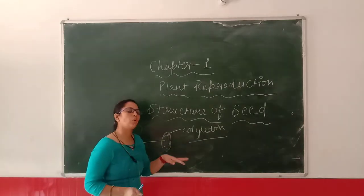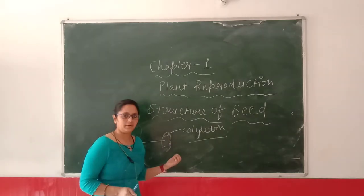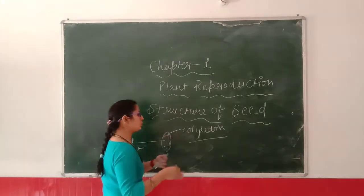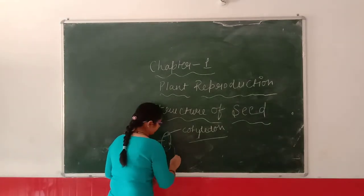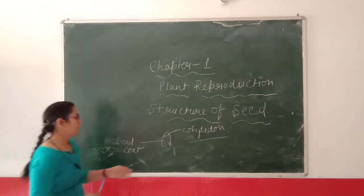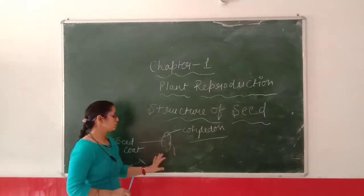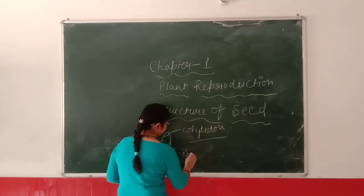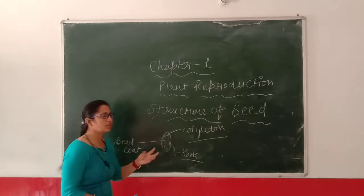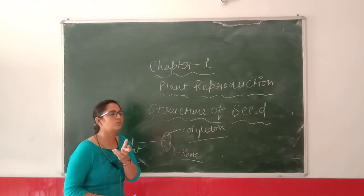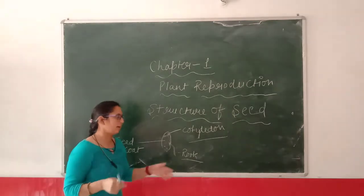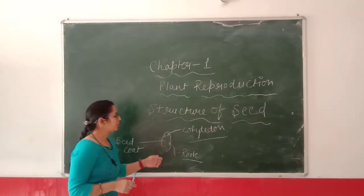When the seed grows into a new plant, first the root generates from it — the root comes out first. These are called sprouts. The white part that comes out is the root, not the stem. So the root comes out first from the cotyledon.